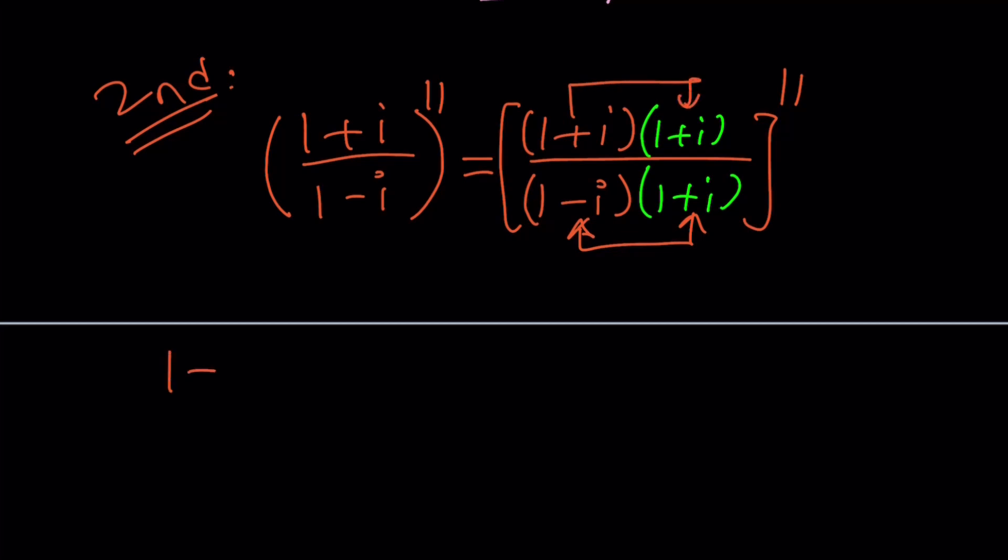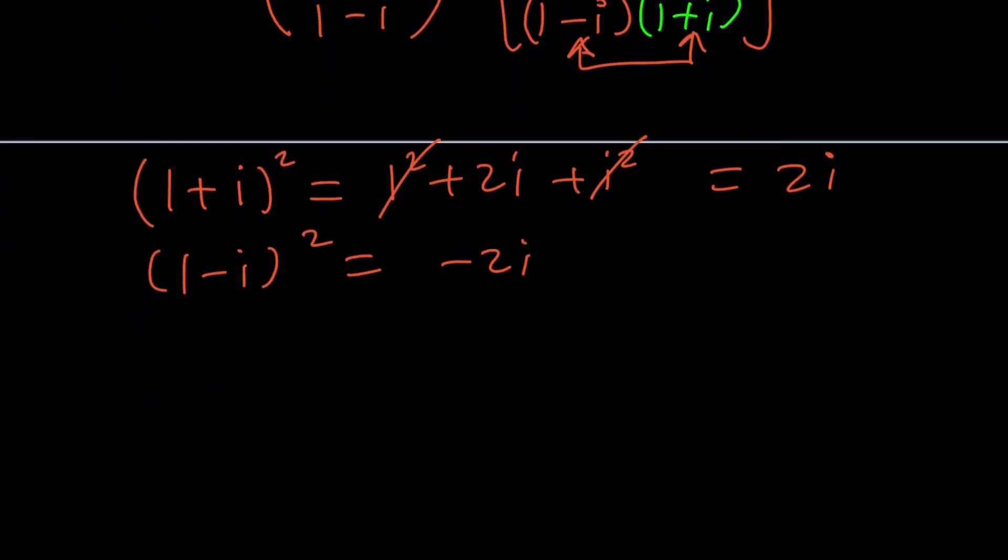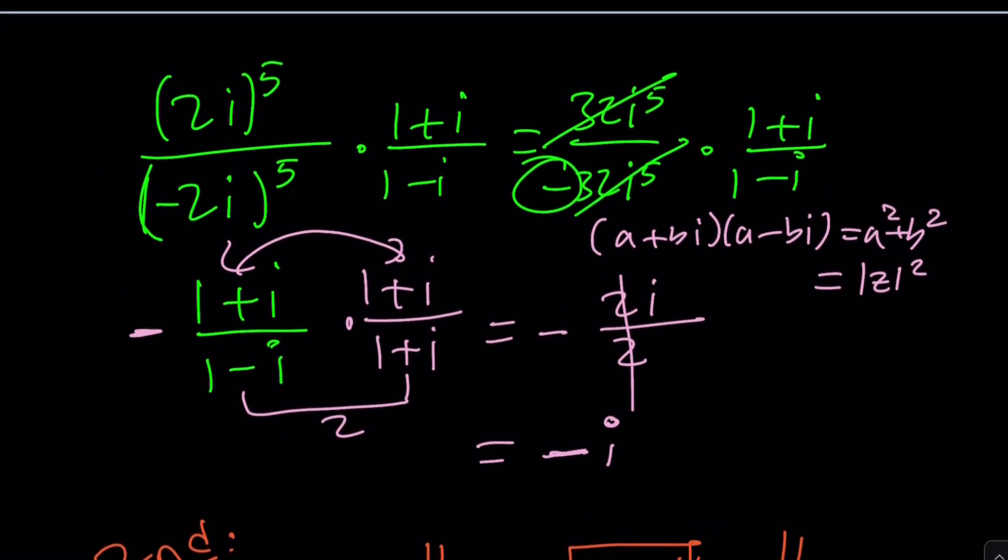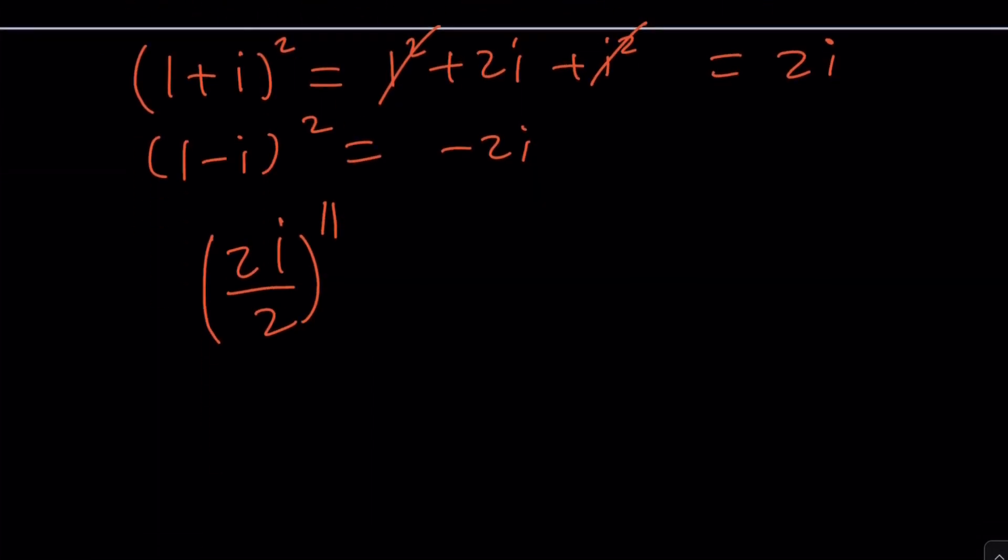Because 1 plus I squared. So I keep saying it, why is this 2I? You might be wondering. Okay, 1 squared plus 2I plus I squared. But I squared is negative 1, so these two cancel out, leaving us with 2I. Similarly, 1 minus I squared is negative 2I. So this is going to give us 2I divided by 2, and we need to raise it to the 11th power. So it's kind of similar to the first method, but we don't have a minus sign, and we have the 11th power.